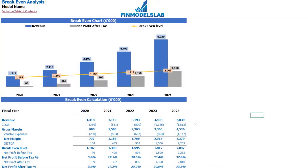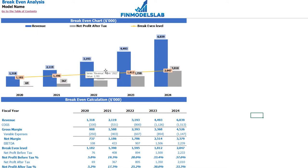On the breakeven tab you may find the calculation of revenue breakeven level and a breakeven chart. For this particular use case, the revenue breakeven level is less than the actual revenue — this means that the company is profitable.